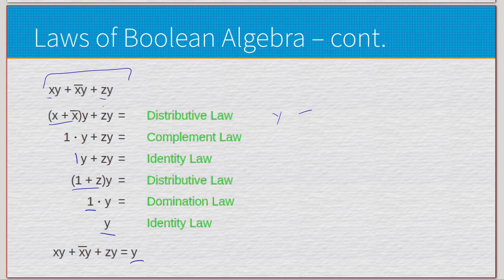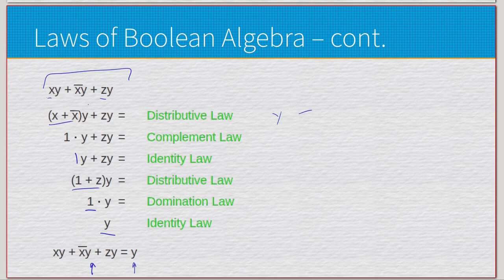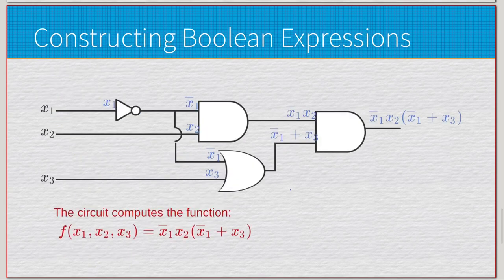If you were to draw this as a schematic, you'd have three inputs and about six different gates. After applying these simplifications, all of that gate logic disappears — the x input, the z input, all the gates — and you're just left with the y input. This is a clear example of why we care about simplification: six operations and three inputs reduced to just one variable.